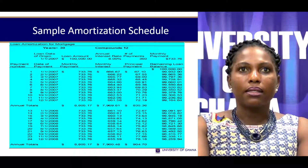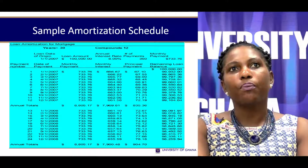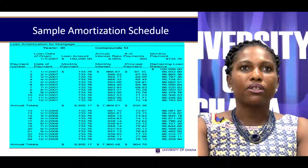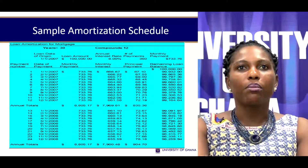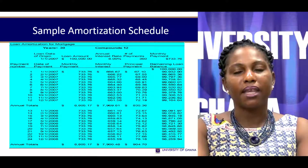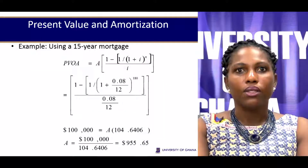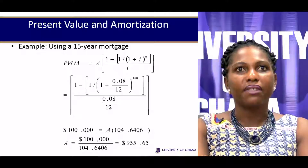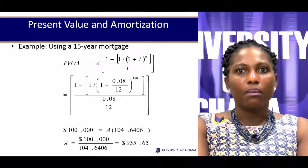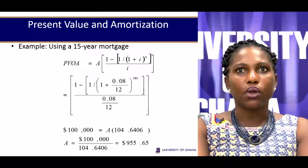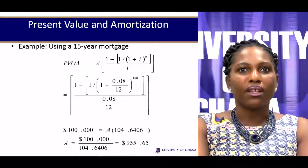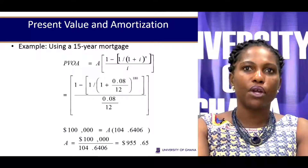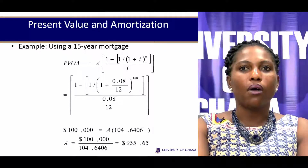For any business seeking to take up a loan facility, the key question to ask is whether the payments required to settle the loan will be generated from the use of that asset. If the answer is yes, it becomes a viable investment. As another example, a 15-year mortgage on the same amount recomputes to $955 per month — so for the same loan paid over a shorter period, the monthly payment amount goes up.